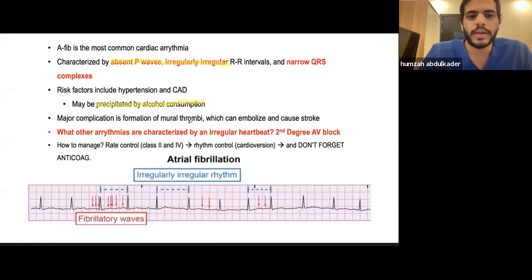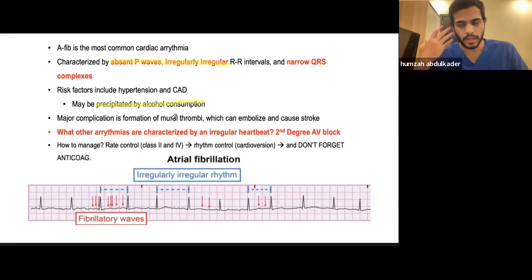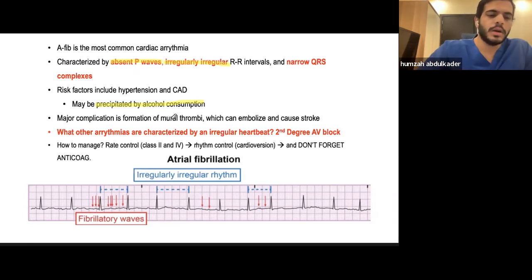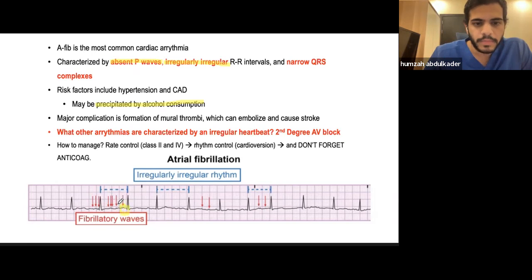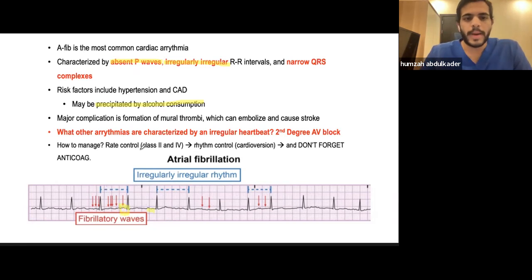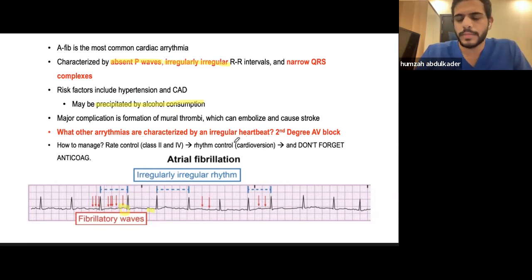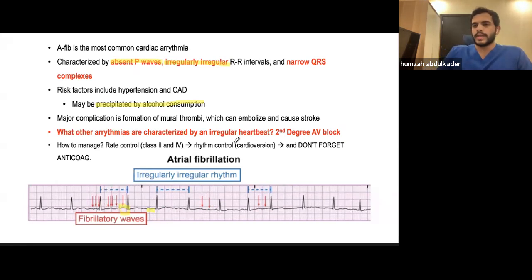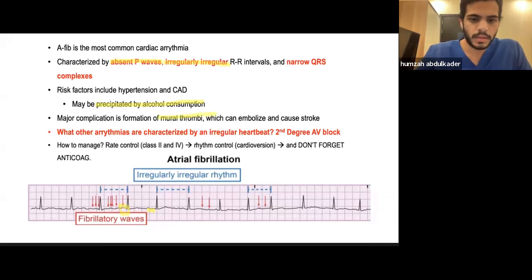An important thing to note in AFib is that it can cause thromboembolism, which can get lodged in the brain and cause stroke — that's an important sequela. In the ECG picture you can see absent P waves and no pattern to the R intervals. For management, the main options are class 2 and class 4 antiarrhythmics and cardioversion — shocking the heart back to normal rhythm. If you do cardioversion, it's important to use anticoagulants because of the risk of mural thrombus.